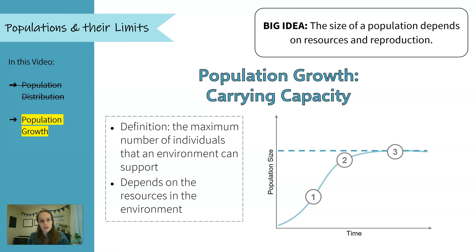The easiest resource to think about is food. For example, there's only so much grass growing to support a population of deer. Once there are too many deer for the amount of grass available, some deer will start to die off and the population will reach that maximum number and stay there. We usually represent this on population size graphs with a horizontal line, and where it intersects the curve that's the carrying capacity — that maximum population size.